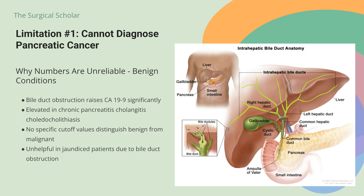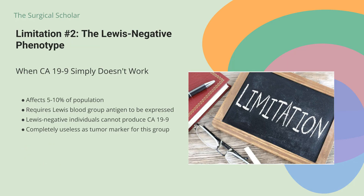CA-19-9 is frequently elevated in various benign conditions. Bile duct obstruction causing hyperbilirubinemia raises CA-19-9 levels significantly. The marker also elevates in chronic pancreatitis, cholangitis, choledocholithiasis, and other cancers beyond pancreatic cancer. There is a very broad range of CA-19-9 levels that can occur in benign disease, and there are no specific cutoff values — even beyond 10,000 units per milliliter — that are seen only in malignant disease.